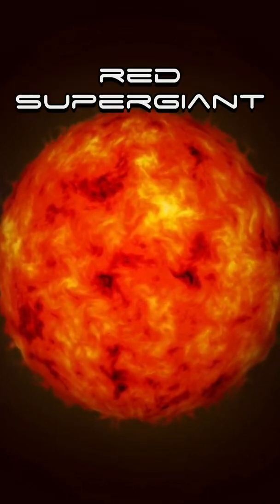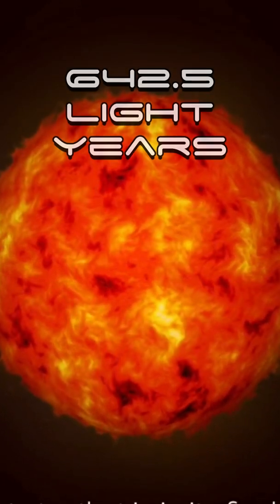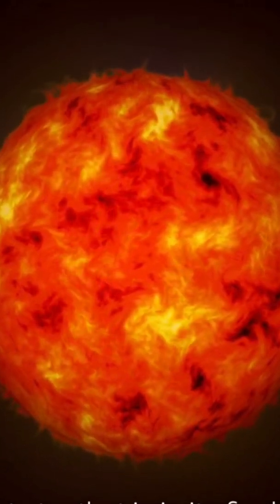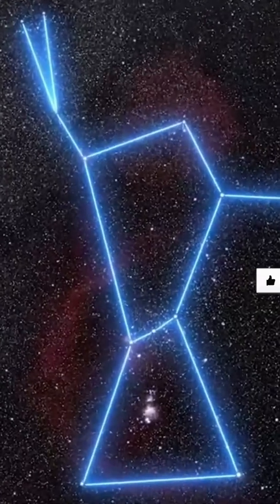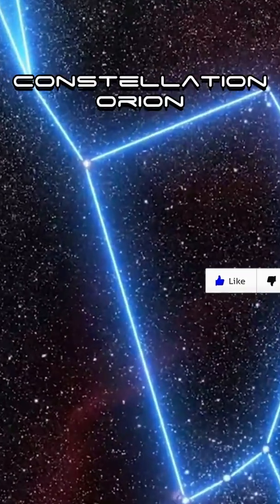So, Betelgeuse is a red supergiant located 642.5 light years away from us, and it forms the shoulder of the constellation Orion.